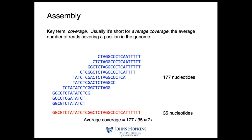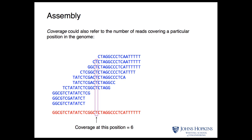One of the key terms in genome assembly is the idea of coverage. Coverage is the average number of reads covering any position in the genome. If our read sequences total 177 nucleotides and our genome length is 35 nucleotides, our average coverage is 177 divided by 35, which is about 7x coverage. That means each base of the genome should be covered by around 7 reads. Coverage can also refer to the number of reads covering a particular position — for example, the coverage of a specific T here is six, as six reads cross that position.